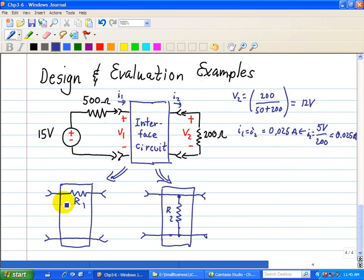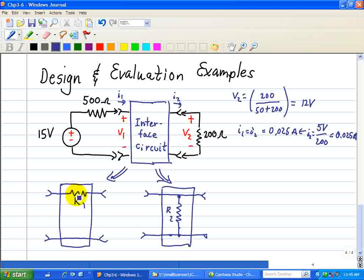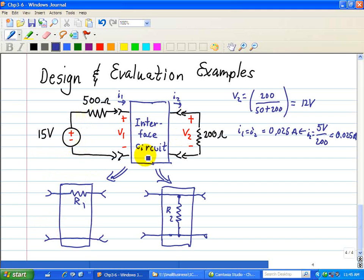So let's look at the first interface design dealing with R1. We'll start off with a KVL using this loop here. So KVL for the first design is minus 15, voltage drop across 500 and R1, as well as the 200.